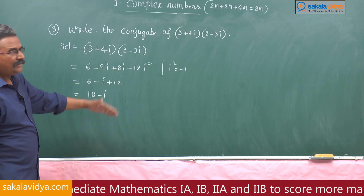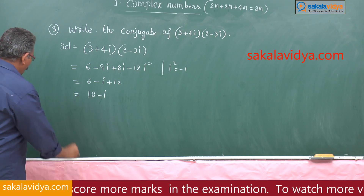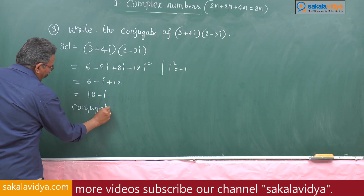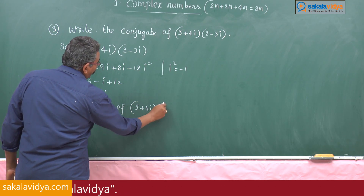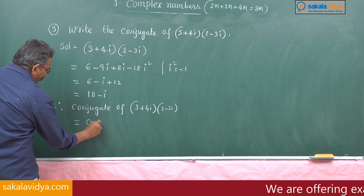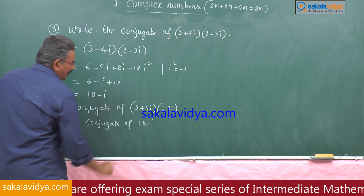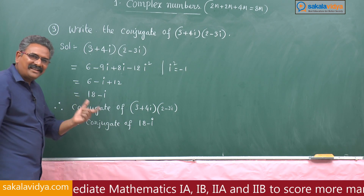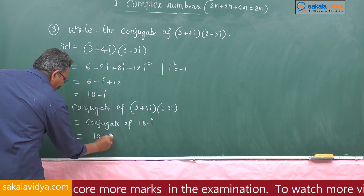Now we have to write the conjugate of 18 - i, which will be the required answer. Therefore, the conjugate of (3 + 4i)(2 - 3i) equals the conjugate of (18 - i). The conjugate of 18 - i is 18 + i. So this will be the answer.